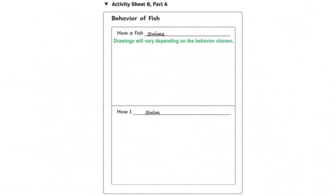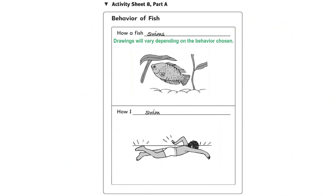Distribute a copy of Activity Sheet 8, Part A to each student. Tell students to choose one behavior that fish and people share and draw a picture showing how a fish and a person each would exhibit that behavior.